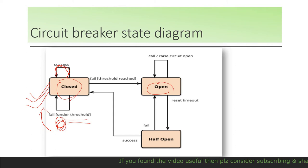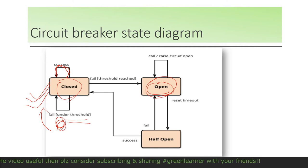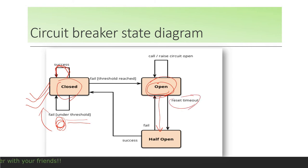But if the threshold is reached, the circuit opens. Any further call to the supplier or service is returned from the circuit breaker itself. In the meantime, before making the call, there is another state called half open. Half open means when you are calling the service through the circuit breaker, it will make a single request to check whether the service is up or not.